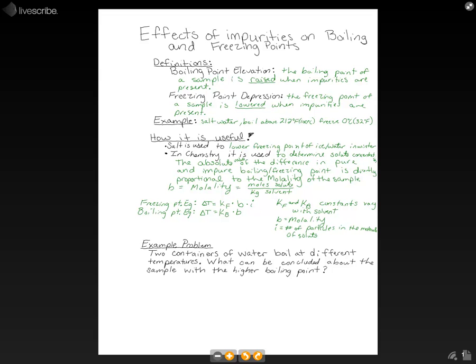The i term in the freezing point equation is simply the number of particles in one molecule of the solute. It's a little strange to think about, but a quick example makes it easy. For NaCl, i equals 2 because you have sodium and chlorine. For barium fluoride, BaF₂, i equals 3 because there are three atoms in that molecule.